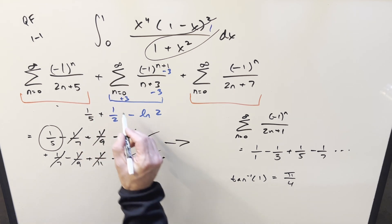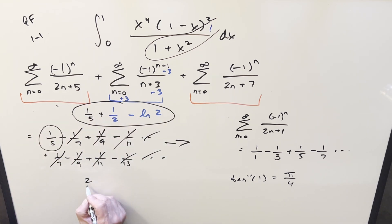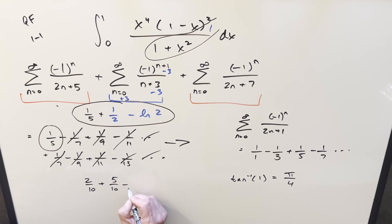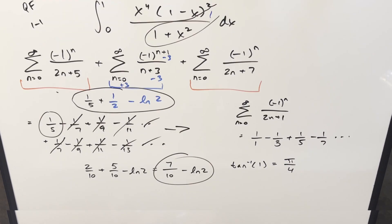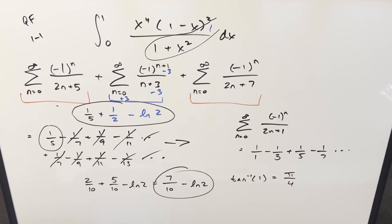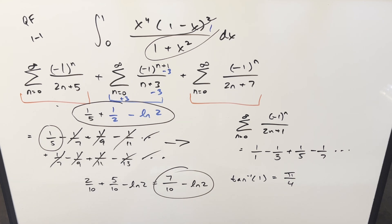To get the final answer, we combine: one fifth (written as two over ten) plus one half (written as five over ten) minus ln(2), giving seven over ten minus ln(2). That's our final solution — the longer method using geometric series. I'll do another video using a more straightforward method. Thanks for watching!